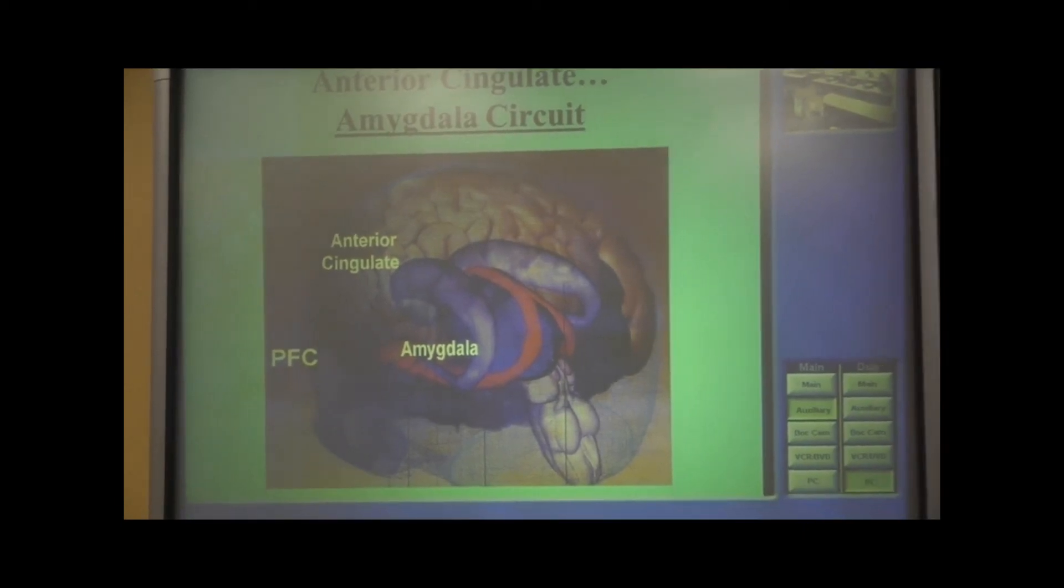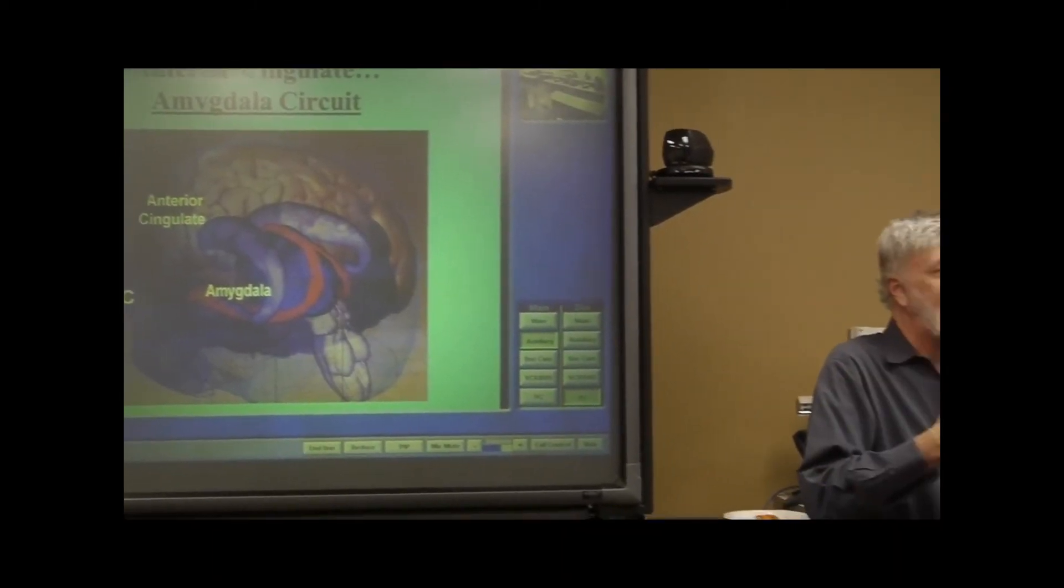So to summarize, the anterior cingulate, in terms of affect regulation, gets turned on by cortisol, and it has two main effects, and one is to shut down the HPA axis, and the other is to reduce the activity that you see in the amygdala.